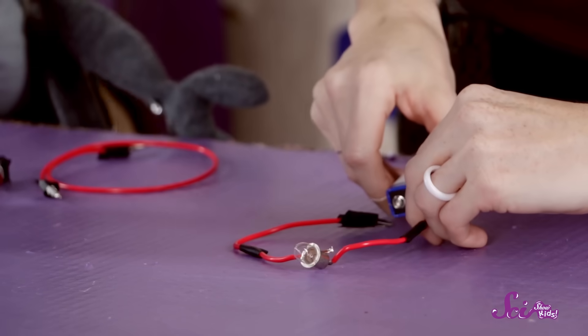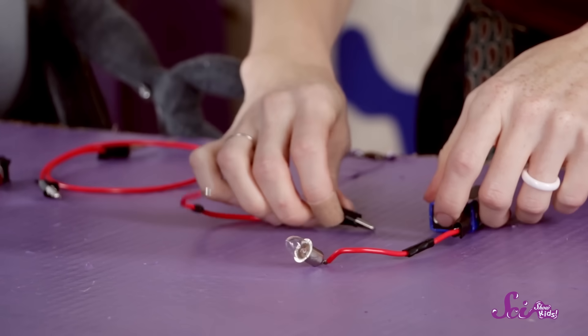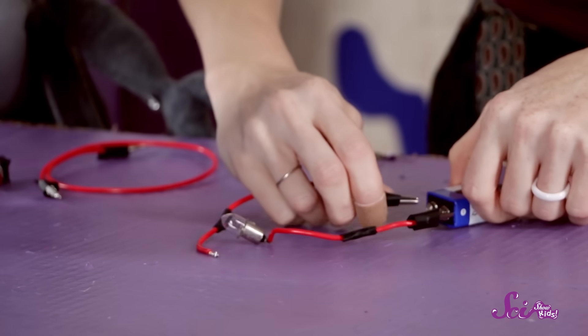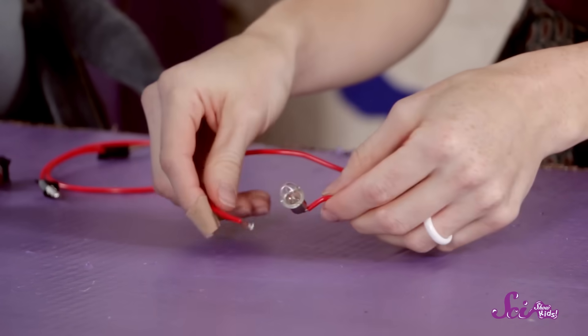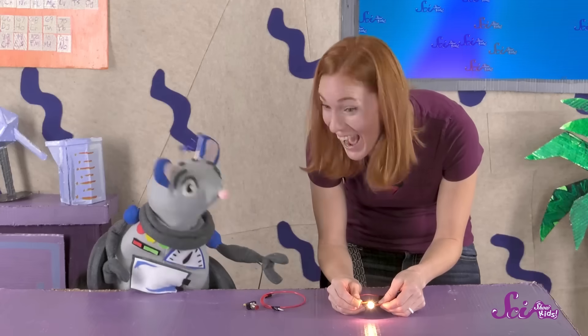Remember, there can't be any spaces in the circuit. So I'll connect the wires to the power source, then I'll connect one wire to the bulb. And when I connect the other wire to the bulb and complete the circuit, the bulb lights up.